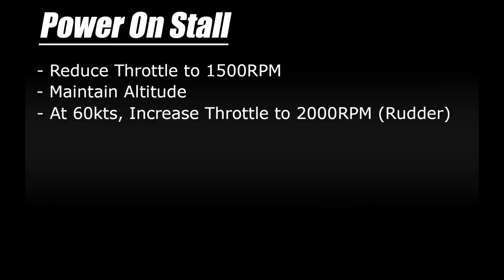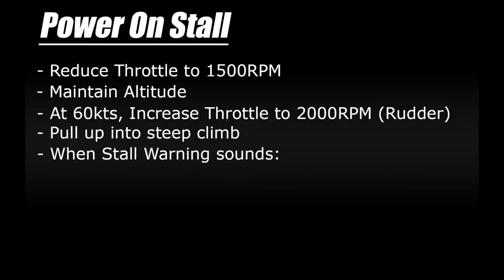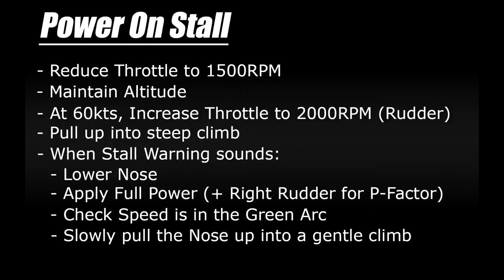When we increase the throttle again, we'll need to remember the P-factor effect, so we'll need to use a bit of right rudder to control that. Once we increase the throttle, we'll pull the plane into a climb — and it needs to be steeper than what we'd normally do after take-off, so quite a steep pitch up. The speed will fall and we'll get the stall warning again. Just like before, when we get the warning we drop the nose, apply full power, remember the rudder for P-factor, and then once the speed is good we pull out of it straight away.